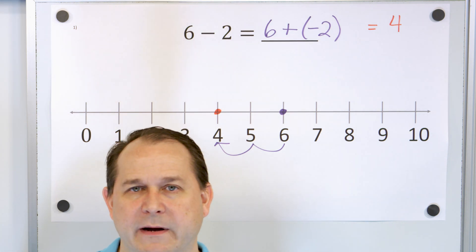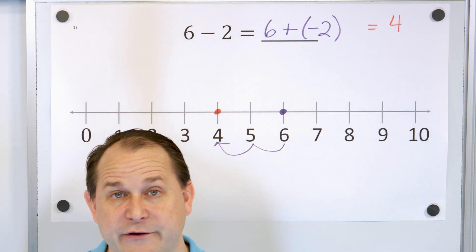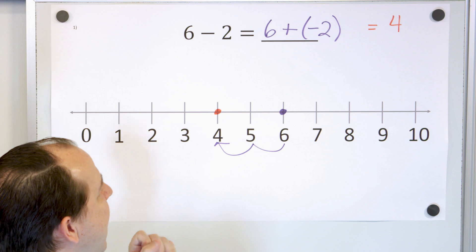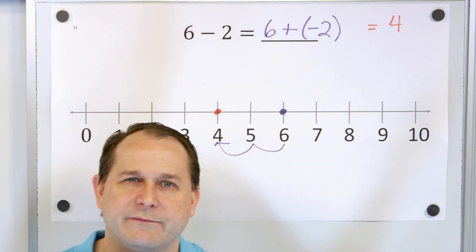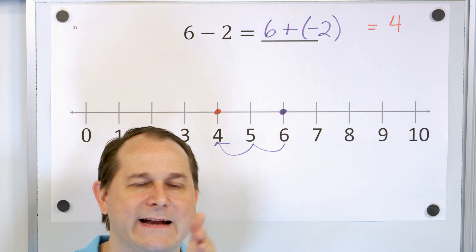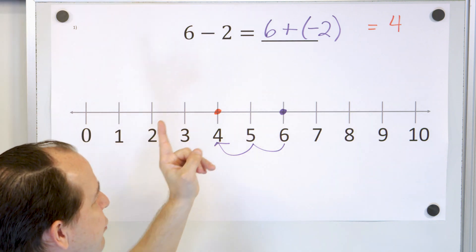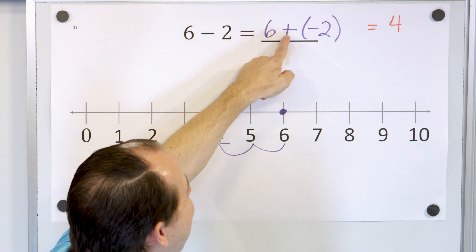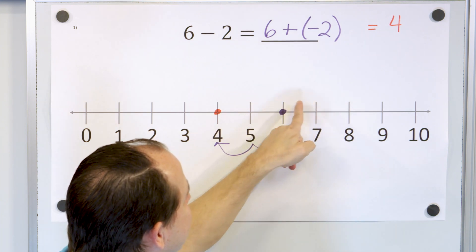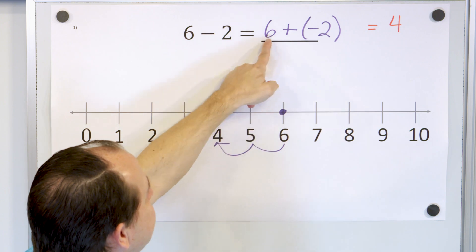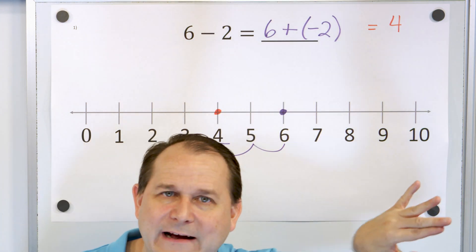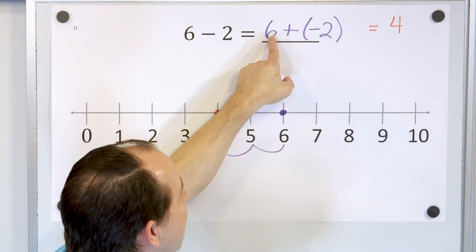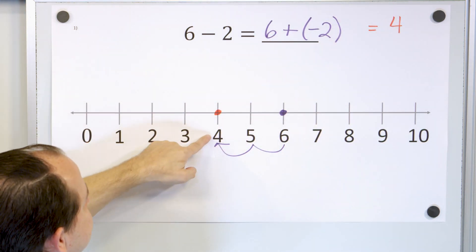You should pay all your debts as soon as you have the money to do it. So adding a negative number is the same thing as starting with something and subtracting. This is really important because when we start to add and subtract negative numbers, it's going to be very helpful to think of subtraction as adding a negative. Starting with six and going down by two gives four, and starting with six and adding a debt also slides you to the left and lands you on four.